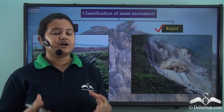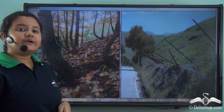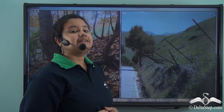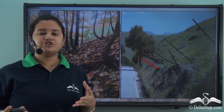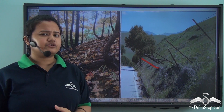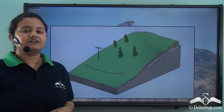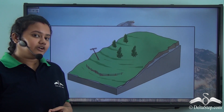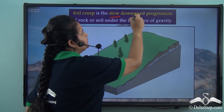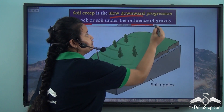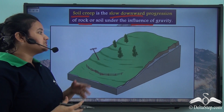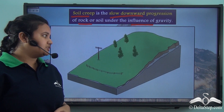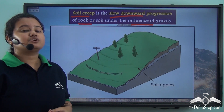Let us discuss mass movements that are very slow or sluggish. Look at these two pictures. In the first picture we can see trees with curved trunks, and in the second picture the railings have tilted. The tree trunks are curved and the railings are tilted due to slow and downward progression of soil under the influence of gravity. The slow and downward progression of rock or soil particles under the influence of gravity is called soil creep — it seems almost as if the soil creeps or crawls on the ground. This process is very slow and is hardly visible to us.